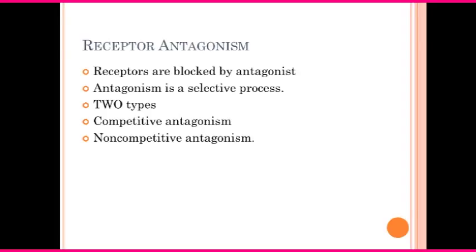Before we go to competitive antagonism, let's discuss receptor antagonism. There are receptors, and through the receptors a drug acts — it's one of the ways in which drugs work. It's like a lock and key: the drug fits into the lock and opens it, and then the entire process of signal transduction occurs inside the cell for the effect to occur. Antagonism involving receptors is a very selective process — a specific receptor, a specific drug, and then interactions bring about the antagonism.